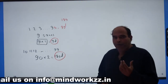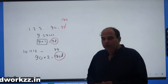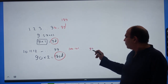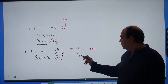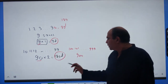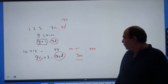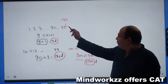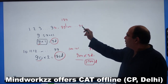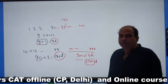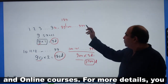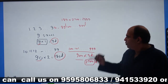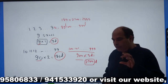After 99, the series moves to 100 onwards. From 100 to 999, there are 900 three-digit numbers, each with 3 digits, giving a total of 2700 more digits. So when you complete writing all numbers from 100 to 999, you will reach 189 plus 2700, which equals 2889 terms total at that point.